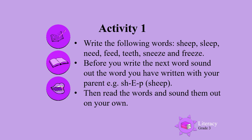Before you write the next word, sound out the word with your parent. Sound out the word that you have written. For example, sh-ee-p. Sheep. You can see the two letters E and E make the sound E. Sleep. S-l-ee-p. The two letters E and E make the sound E.